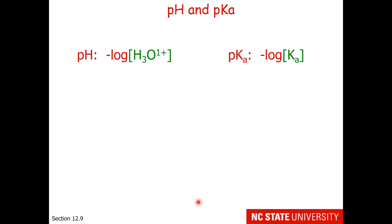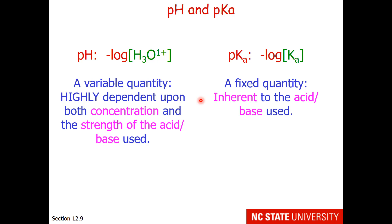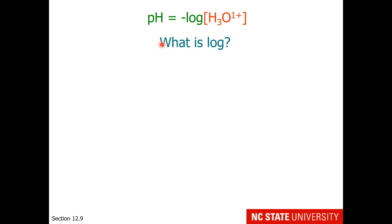pH is the negative log of the hydronium concentration, and pKa is the negative log of the Ka. pH is a variable quantity — it's dependent upon the acid concentration and the strength of the acid and the base. pKa is a fixed quantity; the equilibrium constant does not change at a particular temperature. So the Ka and the pKa are inherent to the acid and the base used.